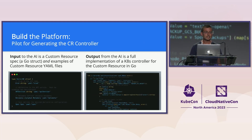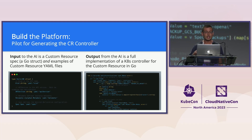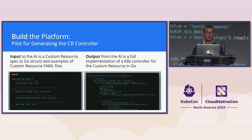Here's an example of a pilot building that controller for you. On the left, we have the input, which is the API definition for this custom resource. On the right, we have the generated code produced by this iterative process. We're really excited about this because the bottleneck to creating bespoke platforms is being able to implement those controllers, and we think we can solve this problem using generative AI.